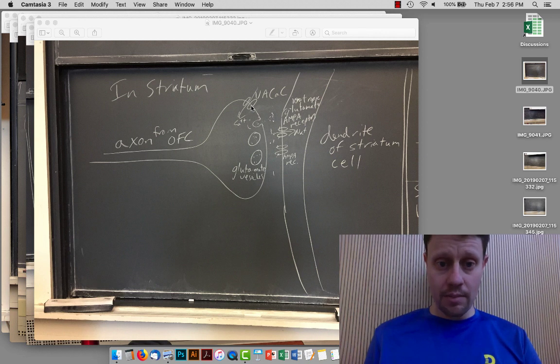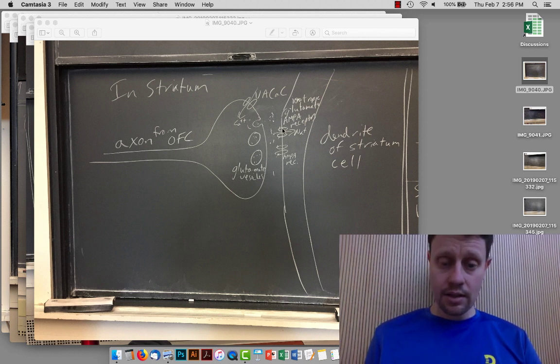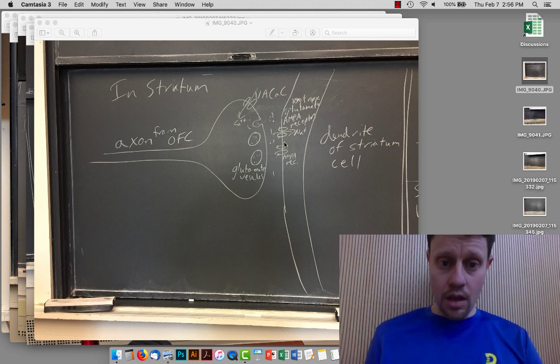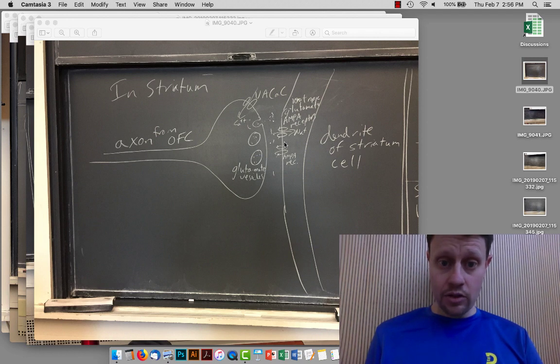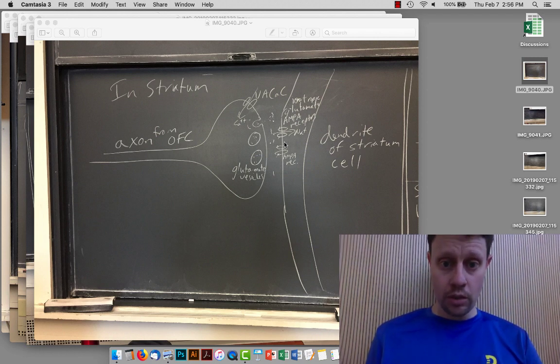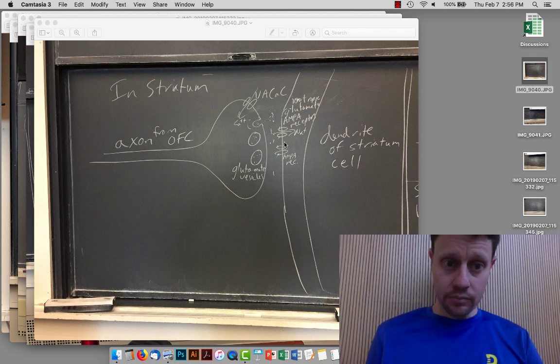It's eventually going to be taken back up by the presynaptic cell, but in the few milliseconds that the neurotransmitter is in the synapse, it's going to stick to the postsynaptic receptors. Glutamate typically binds to ionotropic receptors, that is, ligand-gated ion channels, which should be called glutamate receptors, but instead are called AMPA receptors.